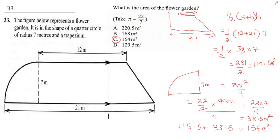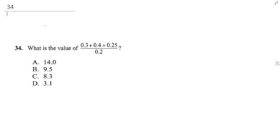Our next question says what is the value of, that's the question. So we're going to do 0.3 plus, now 0.4 is the same thing as 4 over 10 divided by 0.25, which is the same as 1 over 4, all divided by 0.2.